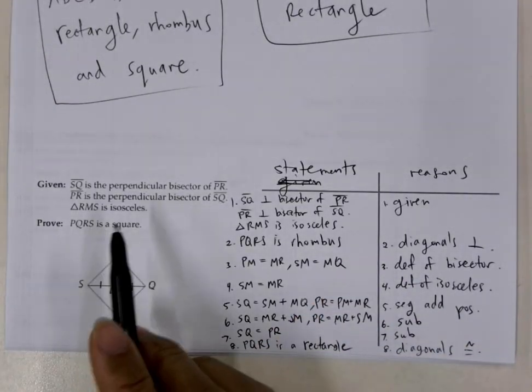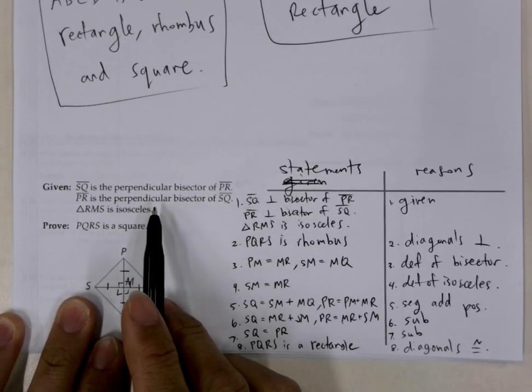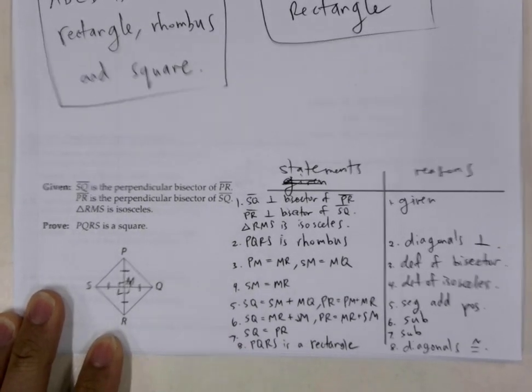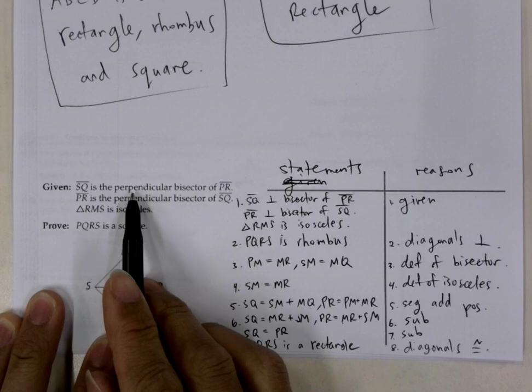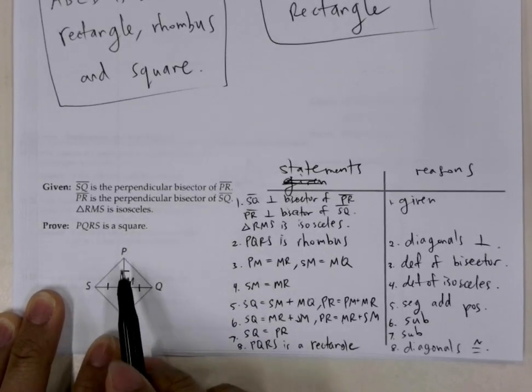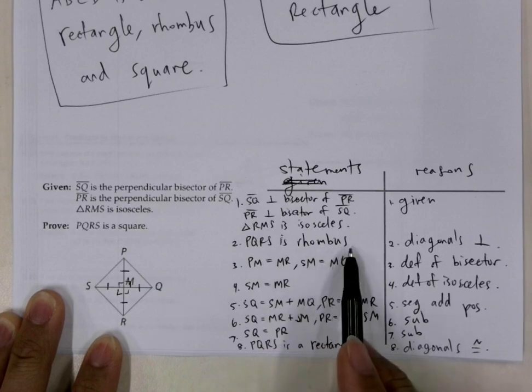Well, we're given that the diagonals are perpendicular. Not only are they perpendicular, but they're perpendicular bisectors, but they're first and foremost perpendicular. So since they're perpendicular, we can immediately say that the shape is a rhombus.